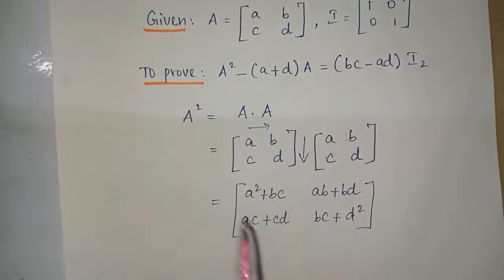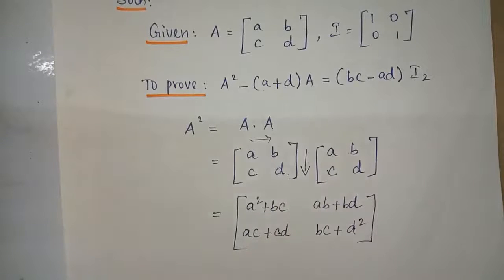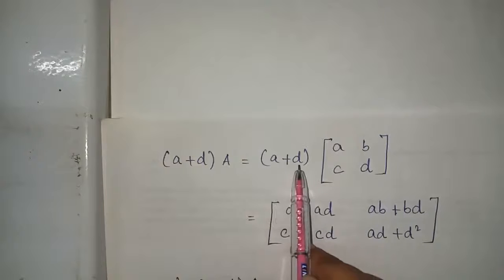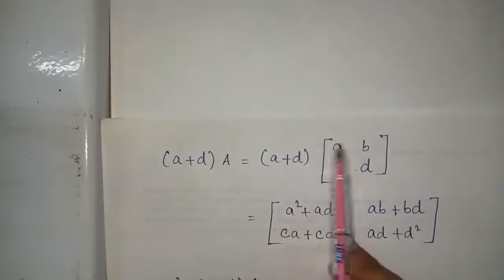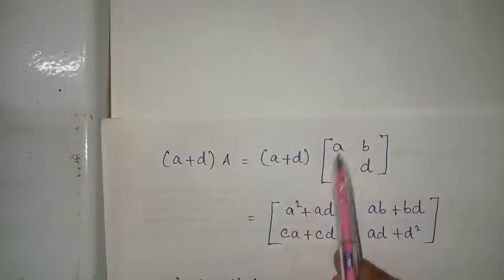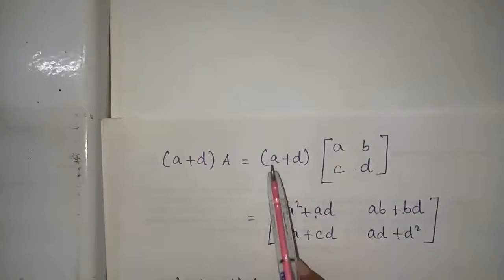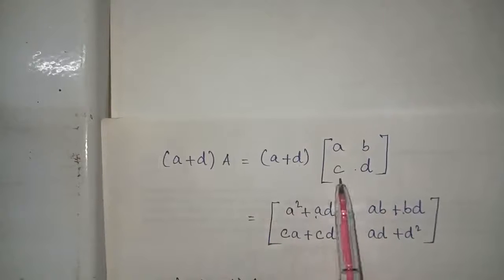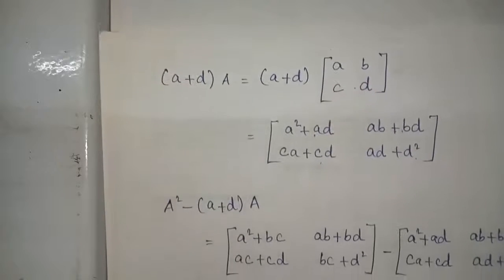Next find (a plus d) times A. Multiply (a plus d) with each element of the matrix A: (a plus d) into a is a squared plus ad, (a plus d) into b is ab plus bd, (a plus d) into c is ac plus cd, (a plus d) into d is ad plus d squared.